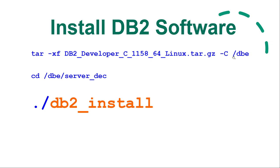For the detailed steps: the software is a gzip (.gz) file, so use a single command to extract and untar it into your target directory. Under that directory you will find a directory called 'server_dash' — that's the directory created by unzipping. Under that directory you will find the utility called db2_install; use this utility to install the DB2 software.